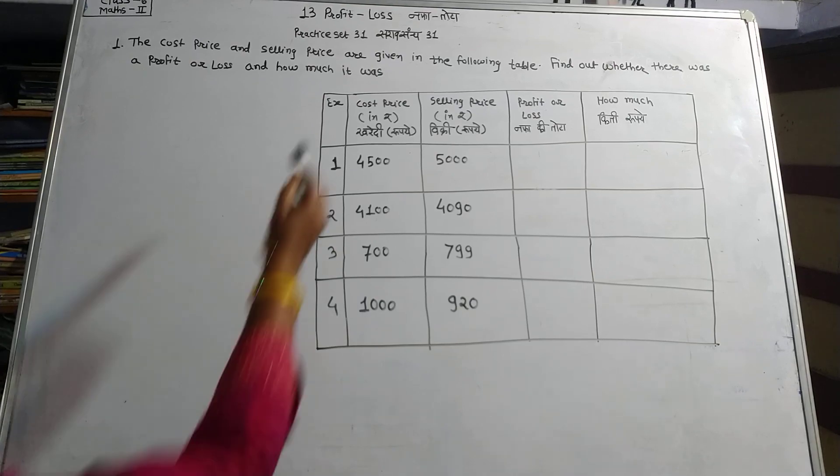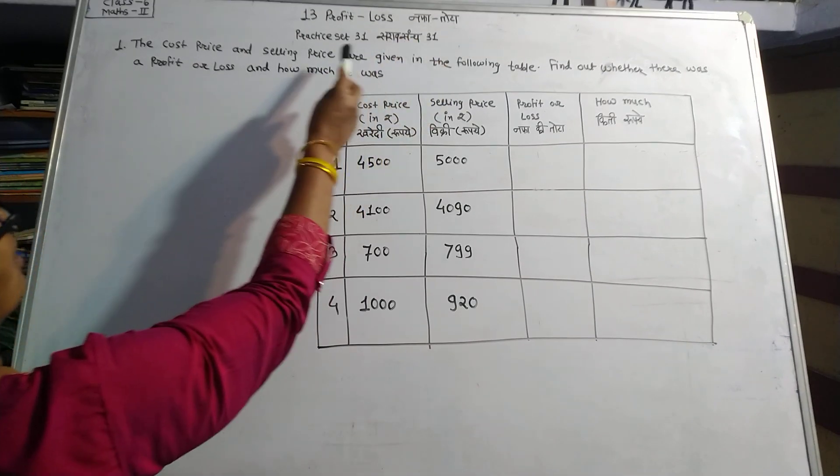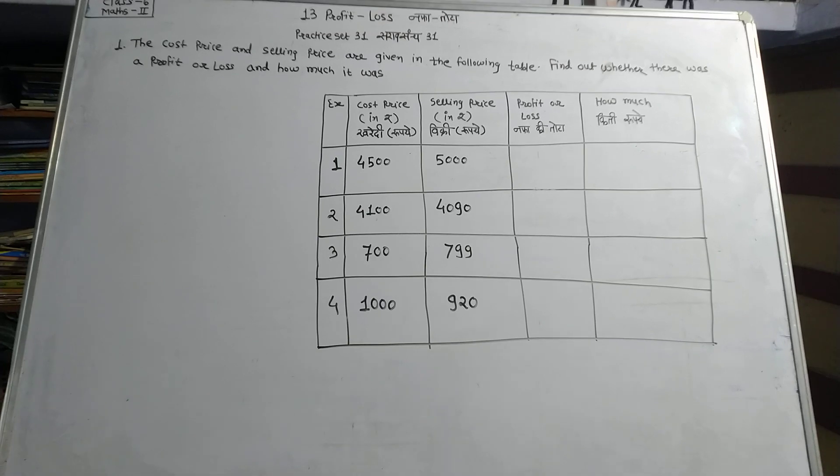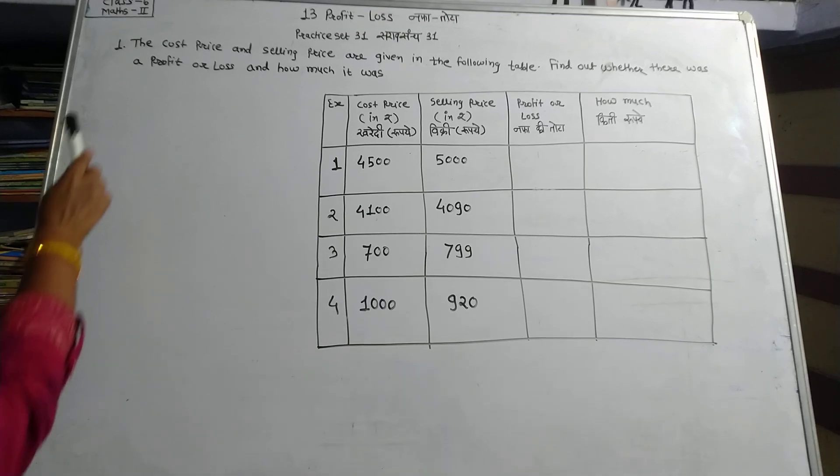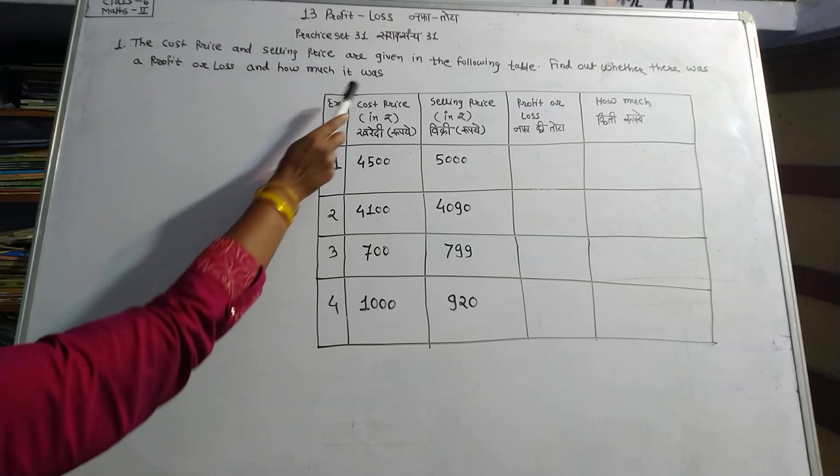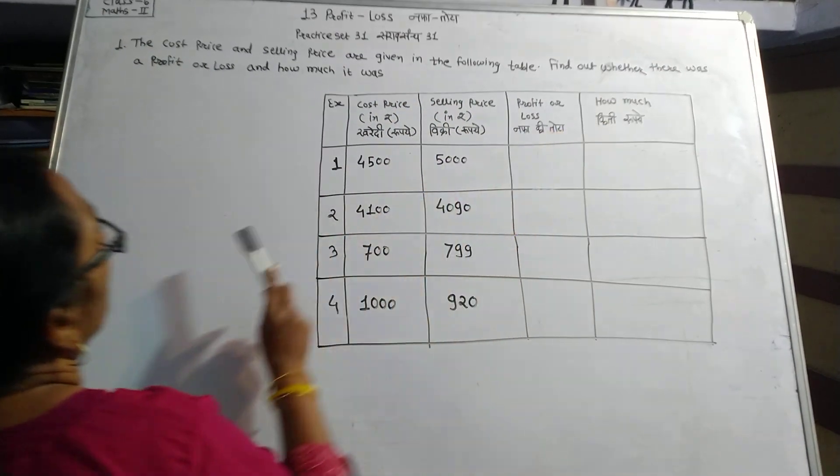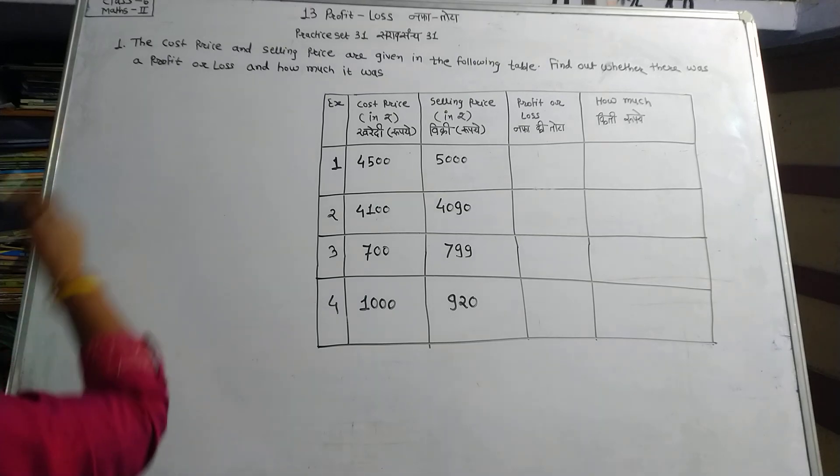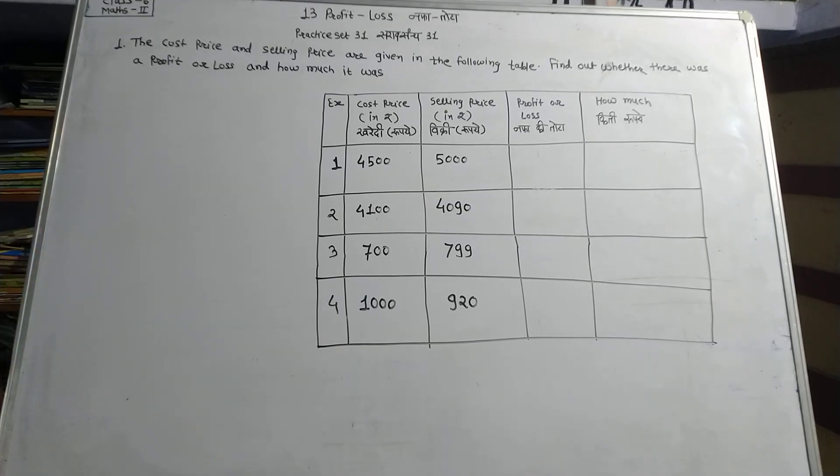Chapter 13, Profit and Loss, Practice Set 31, Question 1. The cost price and selling price are given in the following table. Find out whether there was profit or loss and how much it was.